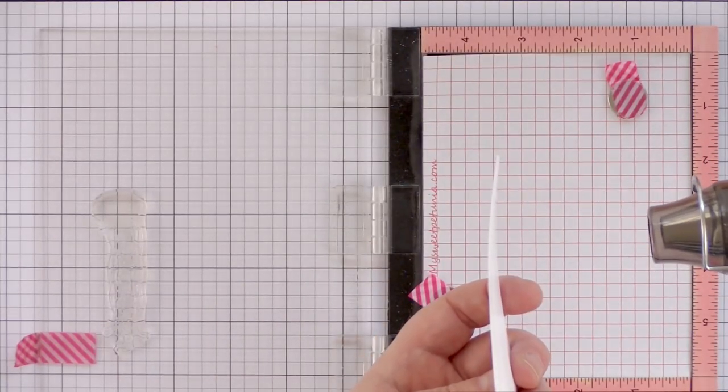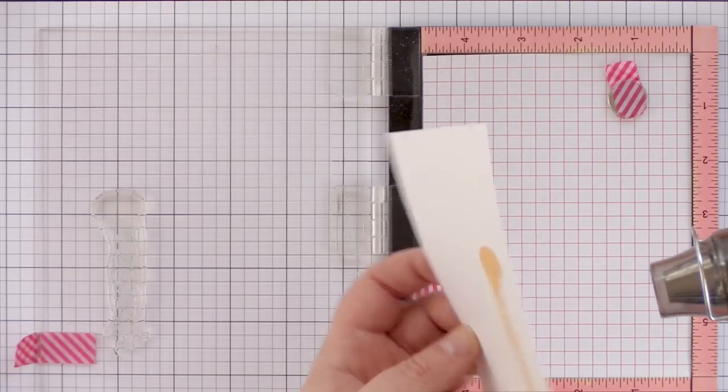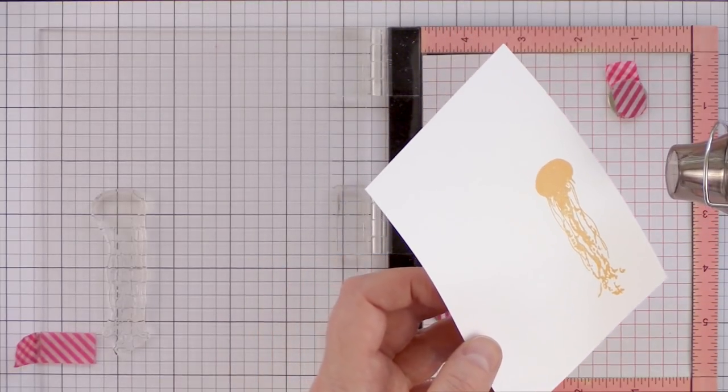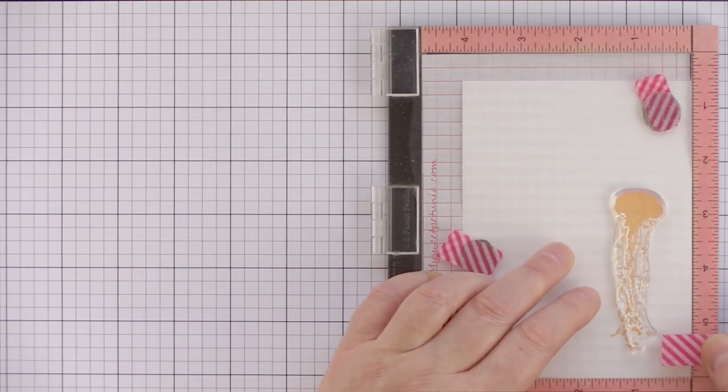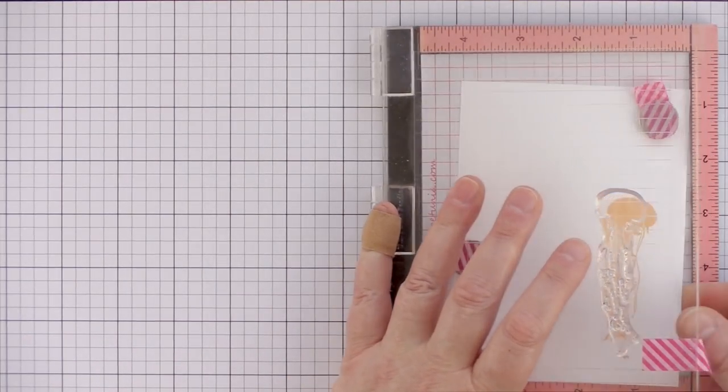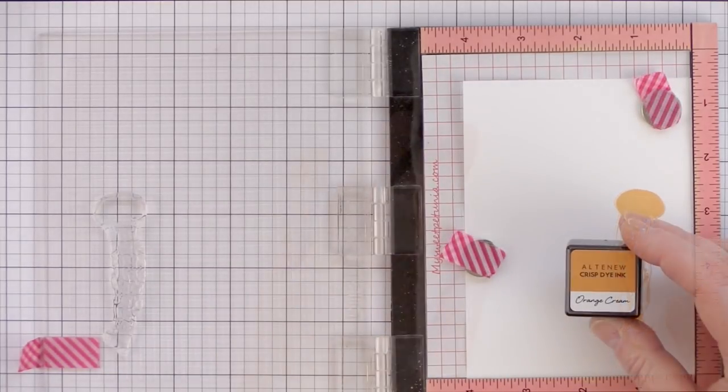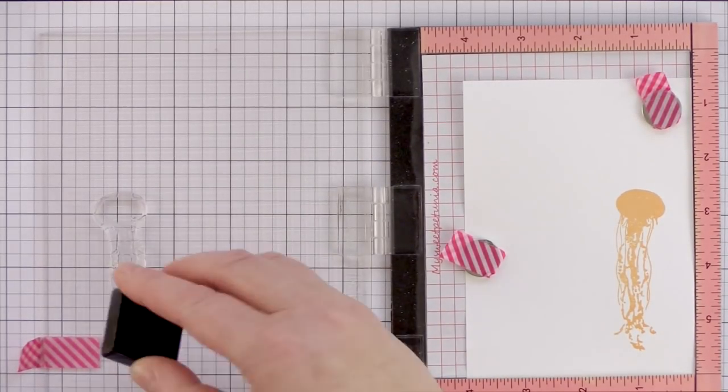I think it's always worthwhile to let the first stamp layer dry before moving onto the second layer. I'm impatient, so I often speed the process up with a heat tool. I've lined up the next layer of the jellyfish over the first layer using the rounded dome as the reference point, and I'm going to stamp this layer in orange cream ink.